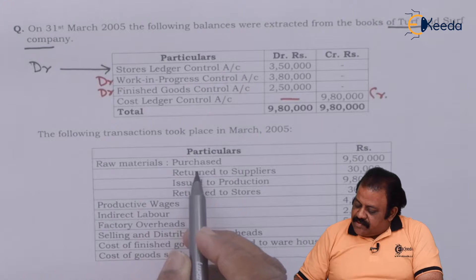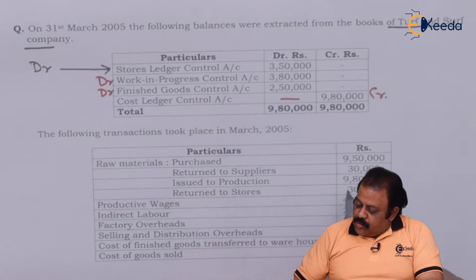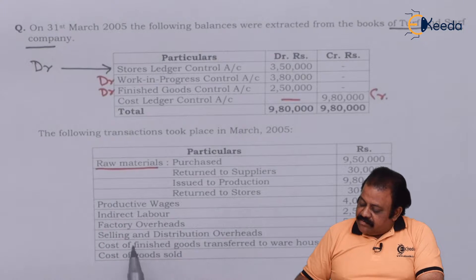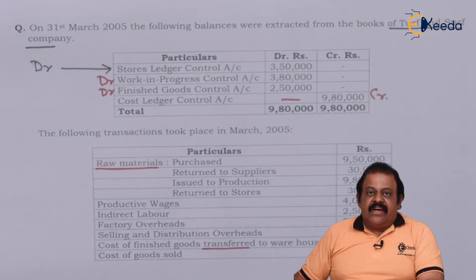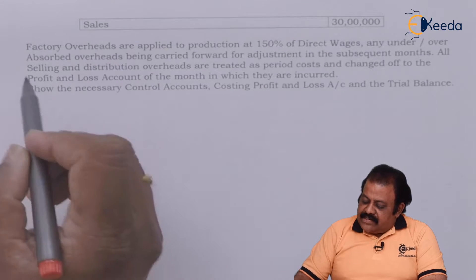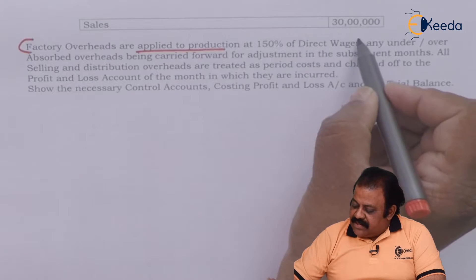Raw material purchased 9,50,000; return to suppliers 30,000; issued to production 9,80,000; return to stores 30,000; productive wages 4,00,000; indirect labor 2,50,000; factory overheads 5,00,000; selling and distribution overheads 4,00,000; cost of finished goods transferred to warehouse 21,30,000; cost of goods sold 21,00,000; sales 30,00,000. Factory overheads are applied to production at 150% of direct wages.